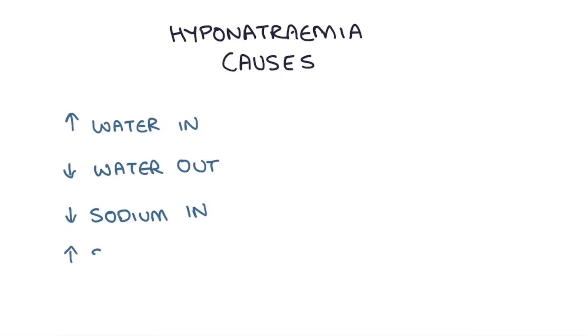Next, let's look at the causes of hyponatremia. In order to work these out, we need to understand what controls the concentration of sodium in the blood. There are four ways that sodium concentration can drop: more water coming in, less water going out, less sodium coming in, or more sodium going out.